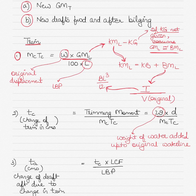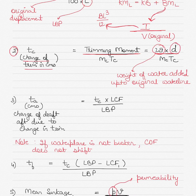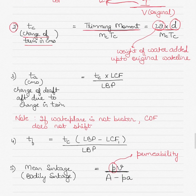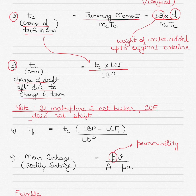Longitudinal BM can be found by dividing the moment of inertia by the original underwater volume. The formula for the moment of inertia is BL³ divided by 12, where B is the breadth of the vessel and L is the length. KB for box-shaped vessels is found by dividing the draft by 2. The change in trim in centimeters can be found by dividing the trimming moment by the MCTC. The trimming moment is defined by W times d, where W is the weight of water added up to the original water line and d is the distance from the center of flotation where the weight was added.